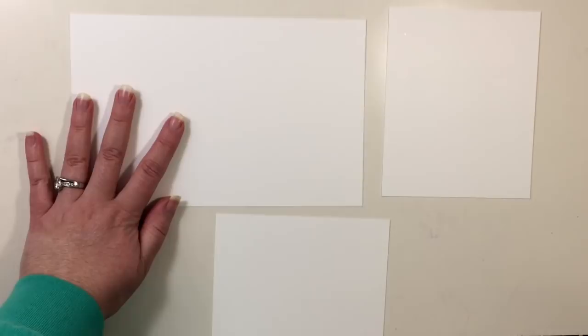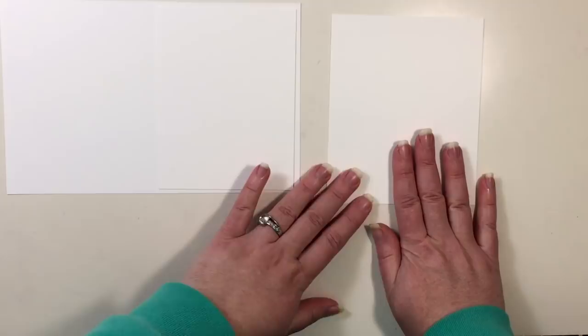With the other half of that cardstock, we're going to cut the mat for the front of our card. So I'm going to put with the long edge at the top, I'm going to cut it at four and then I'm going to rotate and cut it again at five and a quarter.